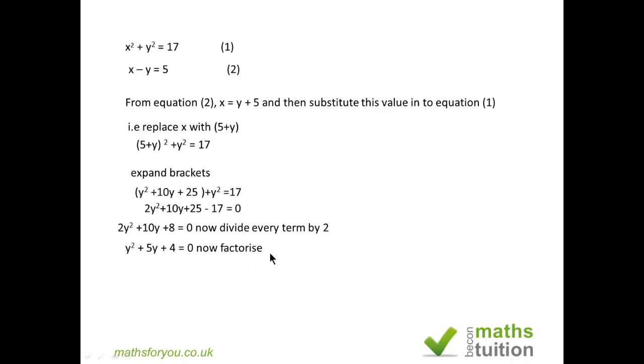Now you need to factorize. You need two factors of 4 such that if you multiply them you get 4, and if you add them you get 5. It cannot be 2 and 2 because that gives you 4. So it has to be 1 and 4. You end up with y plus 1 into y plus 4.